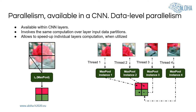To efficiently distribute CNN workload over the MPSOC processors, one should efficiently exploit the parallelism available within the CNN. There are two types of parallelism available within a CNN. The first type is data-level parallelism. This type of parallelism is available within CNN layers and involves the same computation — for example, max pooling — performed over partitions of the layer input data. On this slide, you can see an example where a max pooling CNN layer processes its input data in four parts. If an embedded MPSOC has enough resources, all four data parts can be processed in parallel, allowing speedup of individual CNN layers' computation and achieving high CNN throughput.